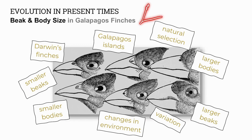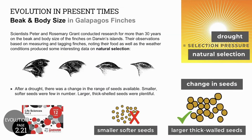The fourth example of evolution in present times is the development of beak and body size in Galapagos finches. These birds are known as Darwin's finches and are found on the Galapagos Islands. There is variation in the population, and when there are changes in the environment, natural selection determines which forms will survive — whether smaller or larger bodies and beaks. Scientists conducted research over many years, measuring birds and noting weather conditions and the food available.